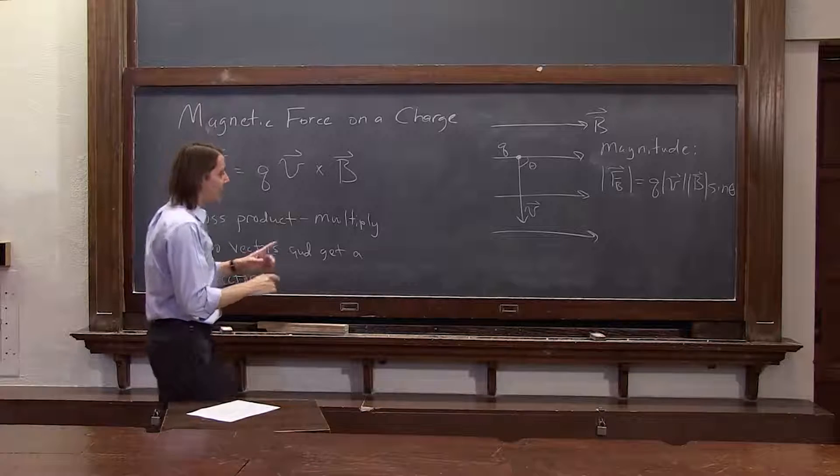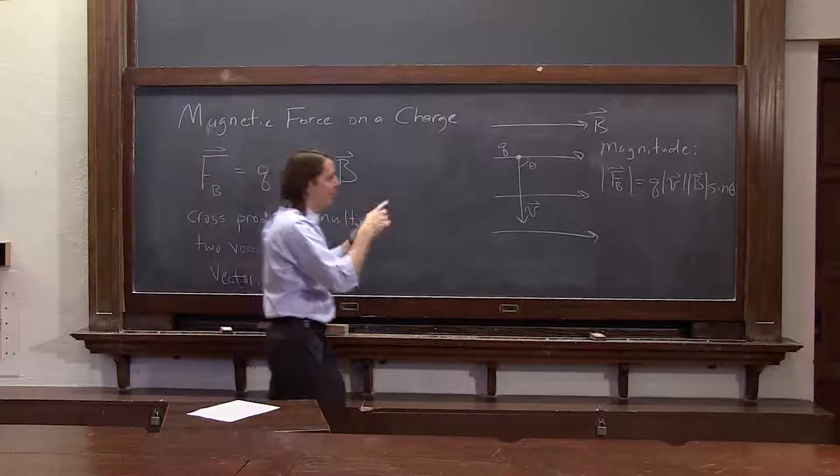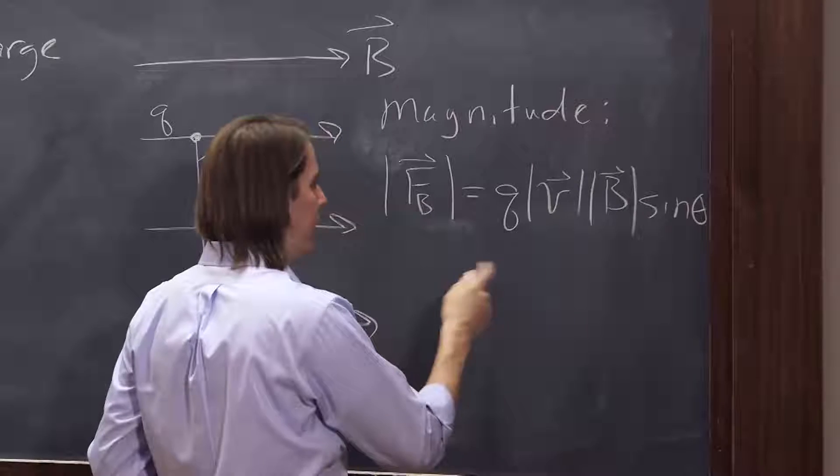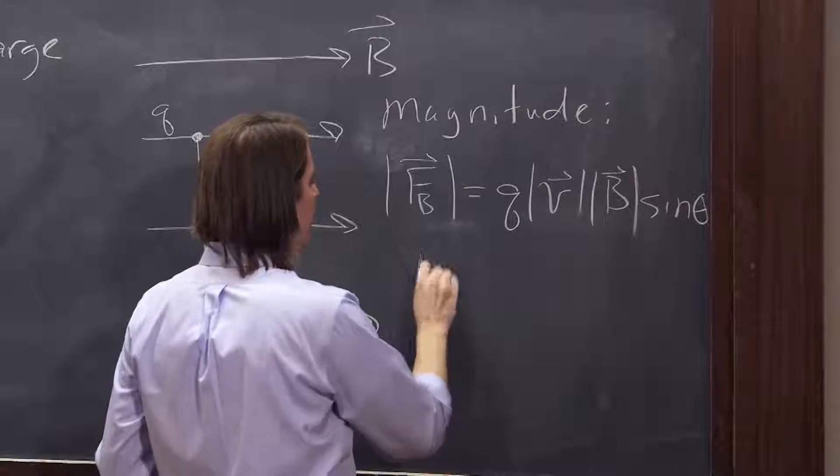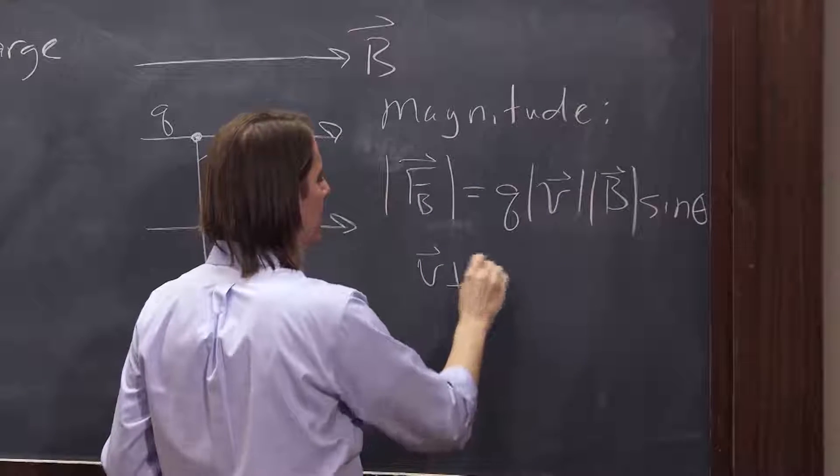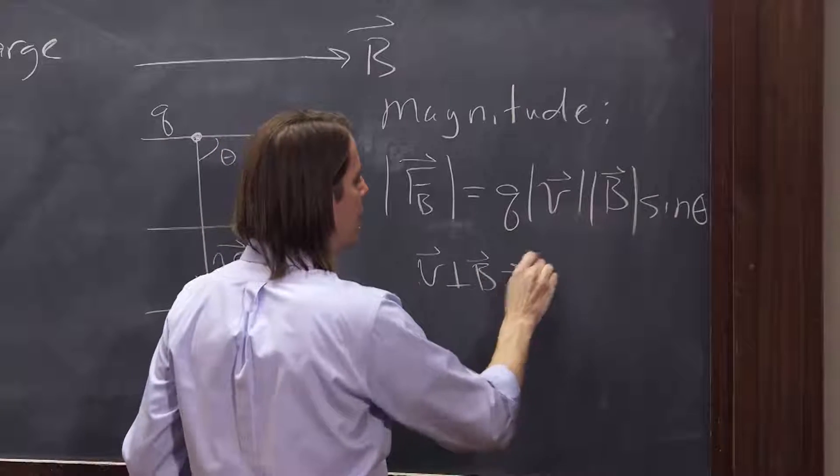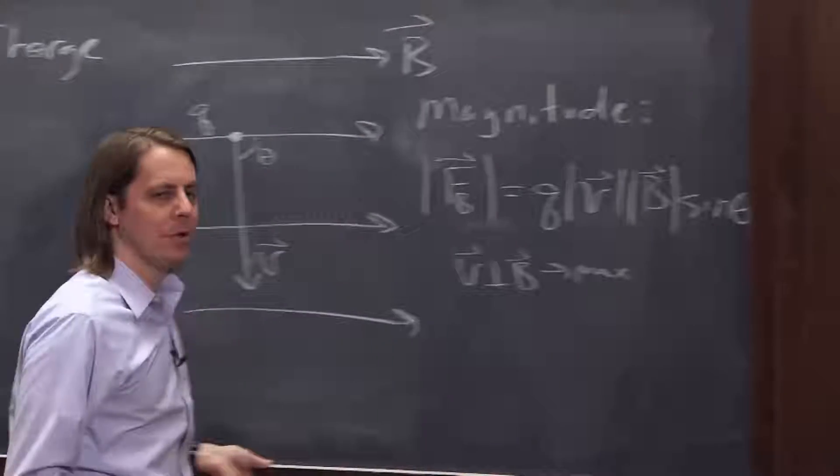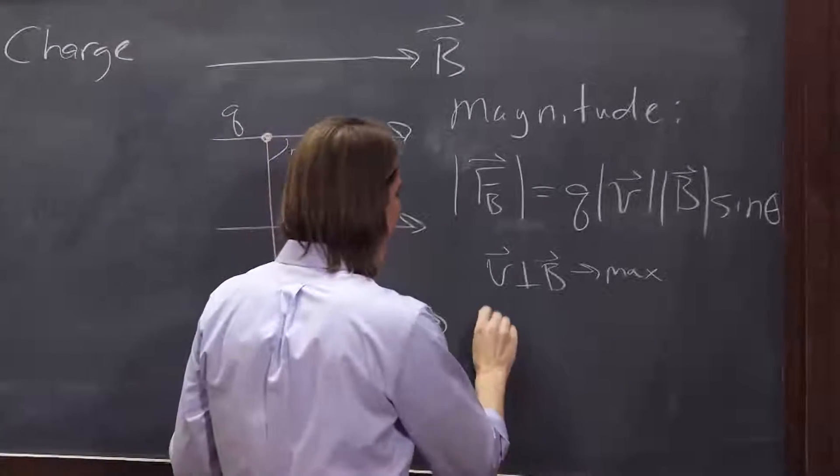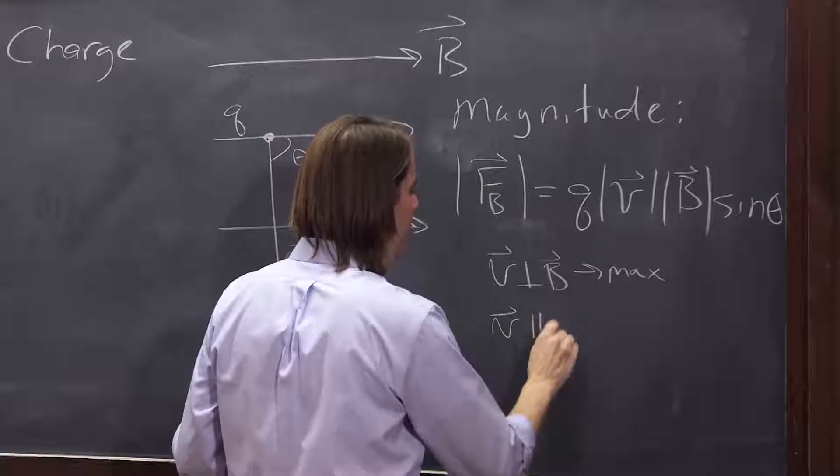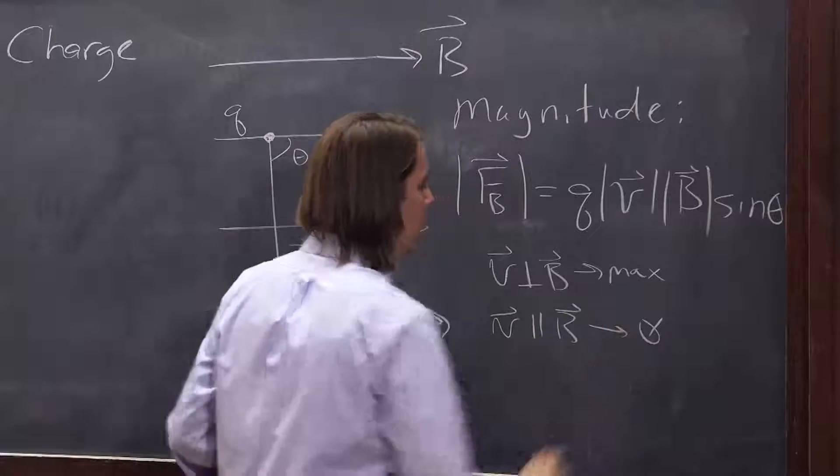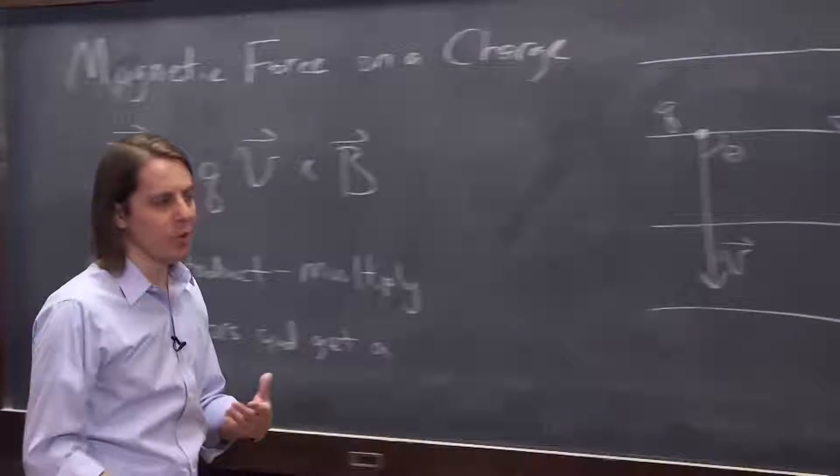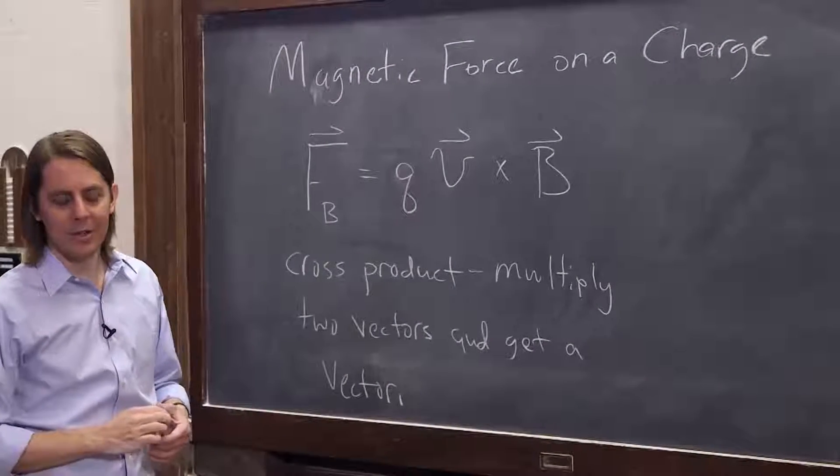Dot product is maximum when they're aligned. But cross product is the opposite. It's maximum when they are perpendicular to each other. If V is perpendicular to B, that's when you get your maximum magnitude. If V is parallel to B, that's when you get zero. In that sense, it's like the opposite of the dot product.